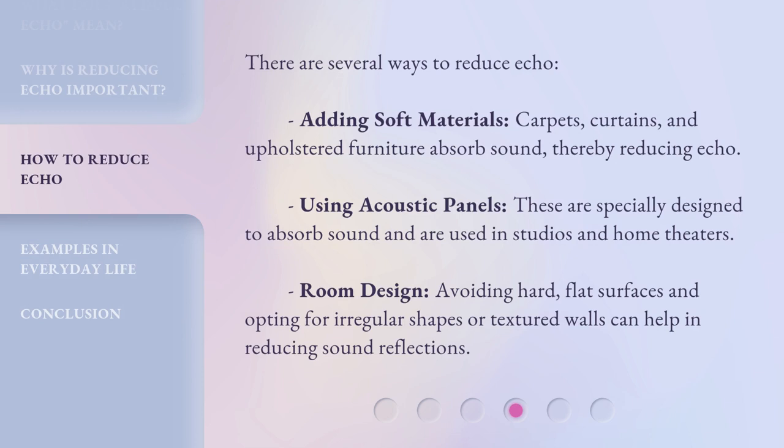Furniture absorbs sound, thereby reducing echo. Using acoustic panels, which are specially designed to absorb sound, is common in studios and home theaters. Room design also plays a role: avoiding hard, flat surfaces and opting for irregular shapes or textured walls can help in reducing sound reflections.